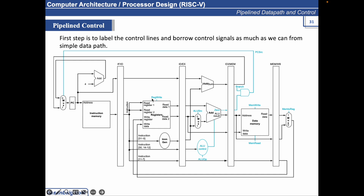There is a RegWrite signal, but we will not be asserting the RegWrite signal in the decode stage, because the instruction that will be writing the data — the register that has to be written — will assert the RegWrite signal in the write-back phase. Once the instruction reaches the execution phase, we have to specify the ALU source: what is the second input of the ALU — whether it is coming from the register file or from the immediate data. Similarly, we have to specify the ALU control signal, i.e., what operation needs to be performed. So the ALU signals have to be asserted here.